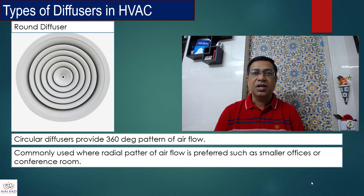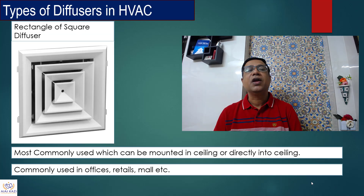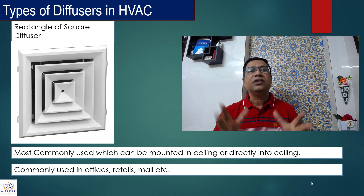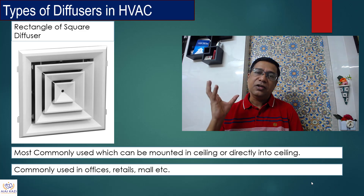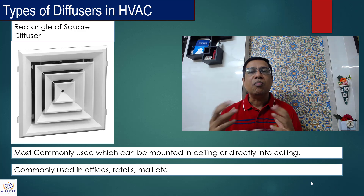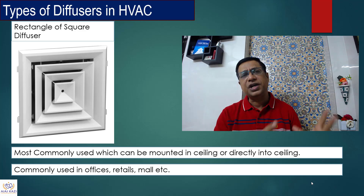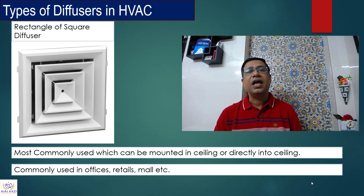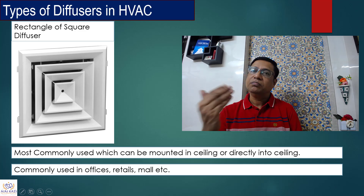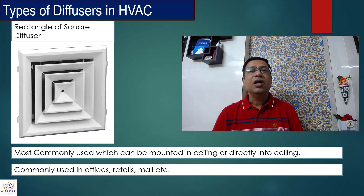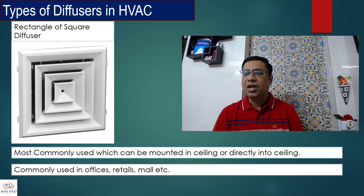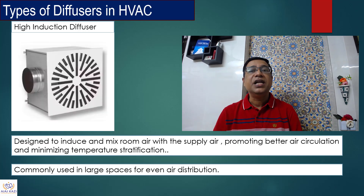The next one is a rectangular diffuser, which is widely used. Most applications have these ceiling mounted. You must have seen square diffusers in most places — commonly used in malls and retail offices. They again have an air pattern coming from four sides. Square diffusers are very, very commonly used, though rectangular ones are less common. The next type is high induction diffusers.